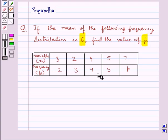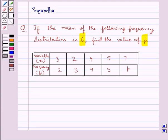This is the frequency distribution given to us in which we have the variable xi and frequency fi. Before we move on to the solution, let's recall the formula to calculate the mean.